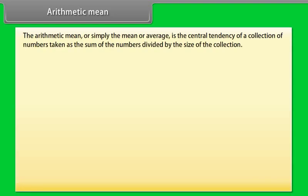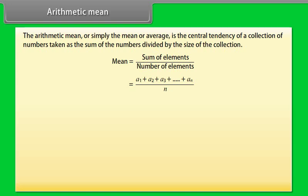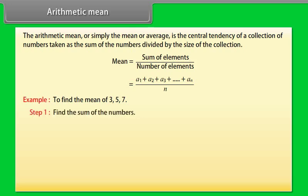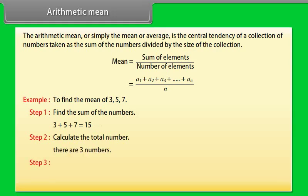The arithmetic mean, or simply the mean or average, is the central tendency of a collection of numbers taken as the sum of the numbers divided by the size of the collection. Mean = (A1 + A2 + A3 + … + An) / n. Example: Find the mean of 3, 5, and 7. Step 1: Find the sum: 3 + 5 + 7 = 15. Step 2: Calculate the total number — there are 3 numbers. Step 3: Mean = 15 / 3 = 5.